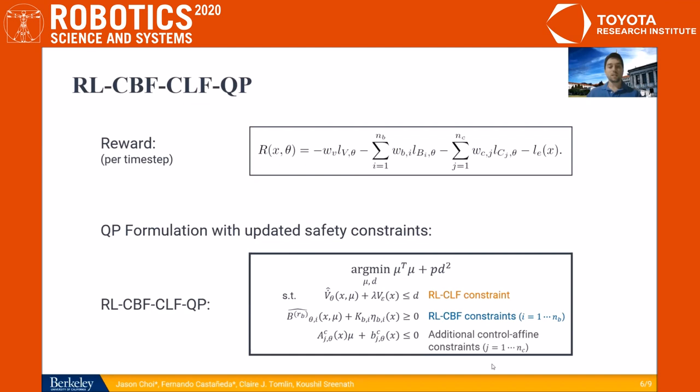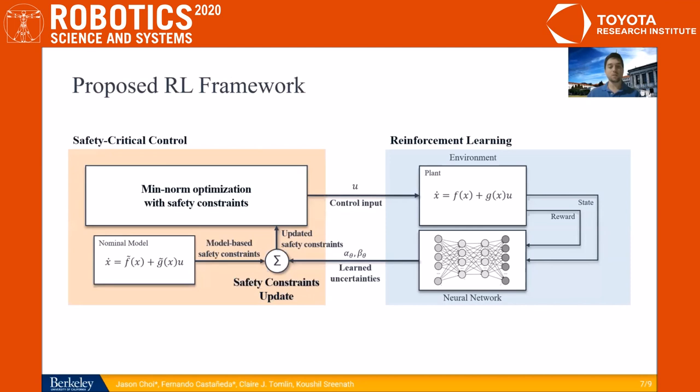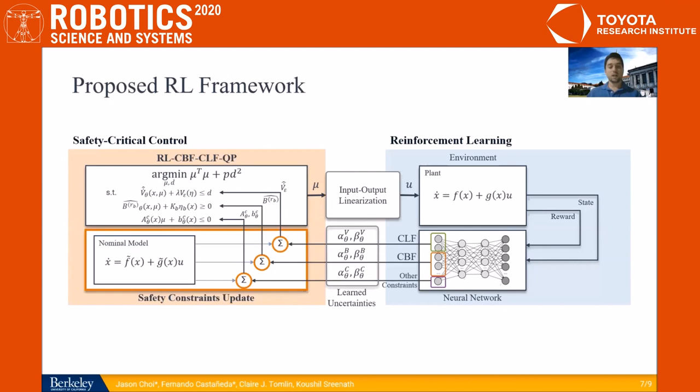These A^C theta and B^C theta are estimates of other constraints that depend on the dynamics. So in the framework that we showed before, this min-norm optimization problem is the one that goes here on top. And specifically, the alphas and betas that we learned are combined with the model-derived terms to construct our estimates, V dot theta and B^Rb theta, that are the ones used in the QP.